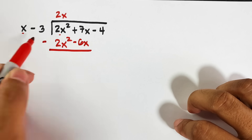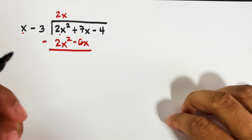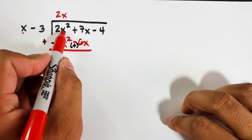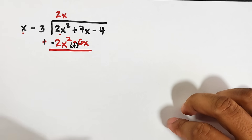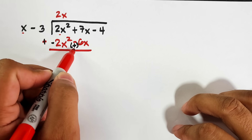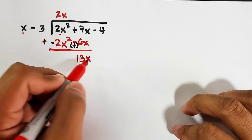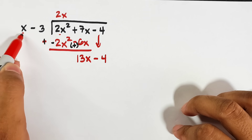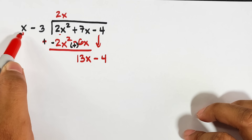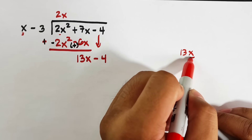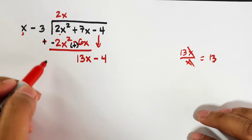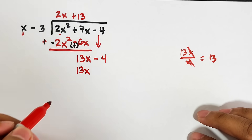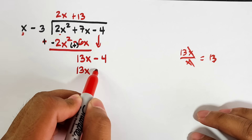We change the signs for subtraction: 2x squared plus negative 2x squared is zero. Then 7x plus positive 6x is 13x. We bring down negative 4. Now divide: 13x divided by x — cancel, cancel — gives 13. So the next term is plus 13. Multiply: 13 times x is 13x, and 13 times negative 3 is negative 39. Then we subtract.